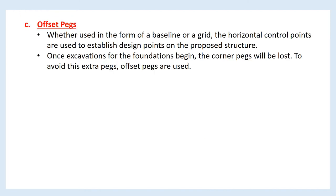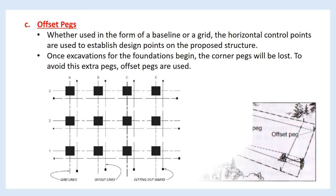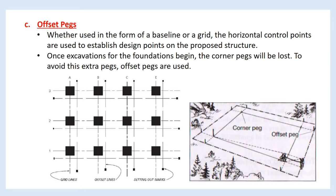A third horizontal control method uses offset pegs. Whether used in the form of a baseline or a grid, the horizontal control points are used to establish design points on the proposed structure. Once excavations for the foundations begin, the corner pegs will be lost. To avoid this, extra offset pegs are used.